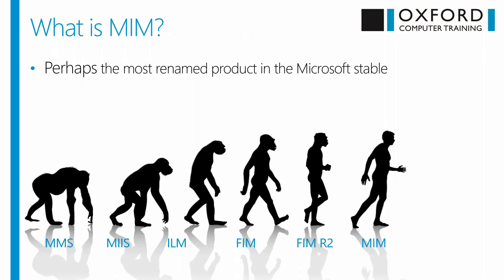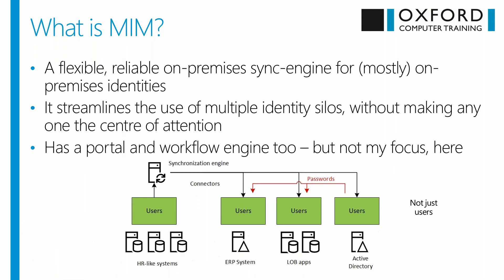So what is MIM? It's perhaps the most renamed product in the Microsoft stable, substantially unchanged for over a decade except in name. Fundamentally and importantly, it is a flexible and reliable on-premises sync engine for on-premises identities. There's no reason why it can't connect to a web service or reach into the cloud, but it tends to be seen and is primarily an on-premises system. That flexibility and performance has meant it's really established itself in many, many organisations as a reliable tool — a tool it's utterly relied upon.